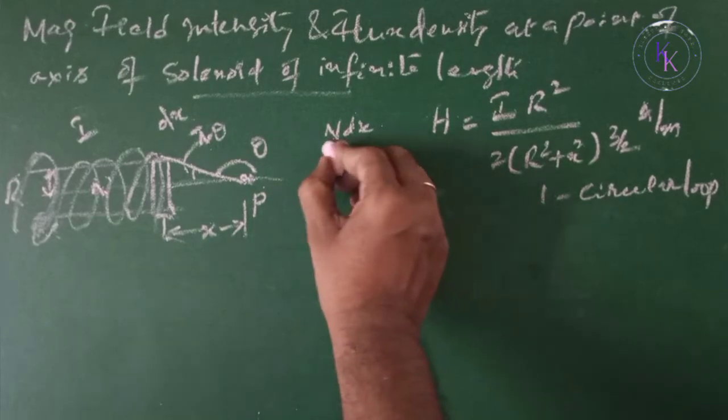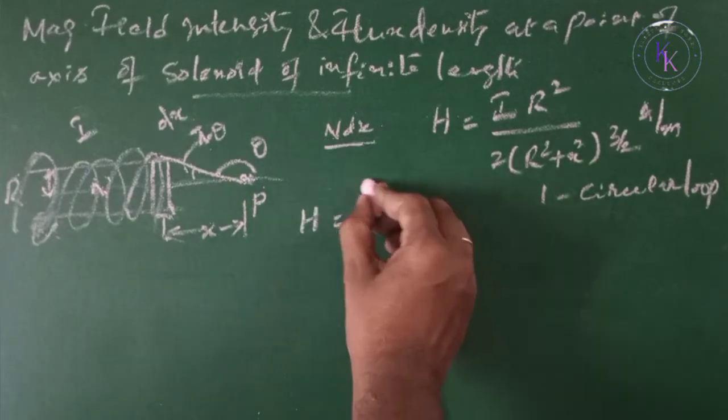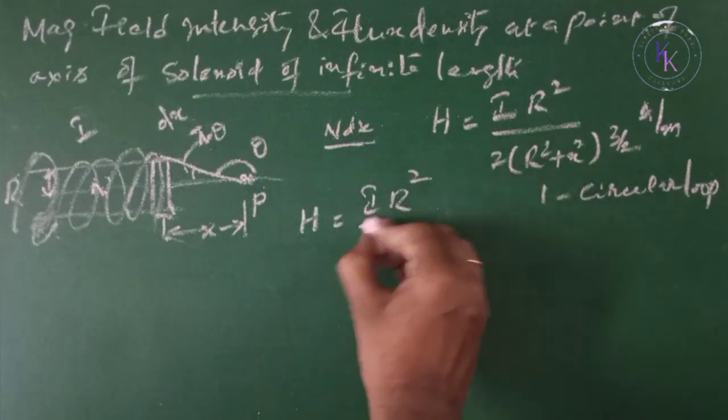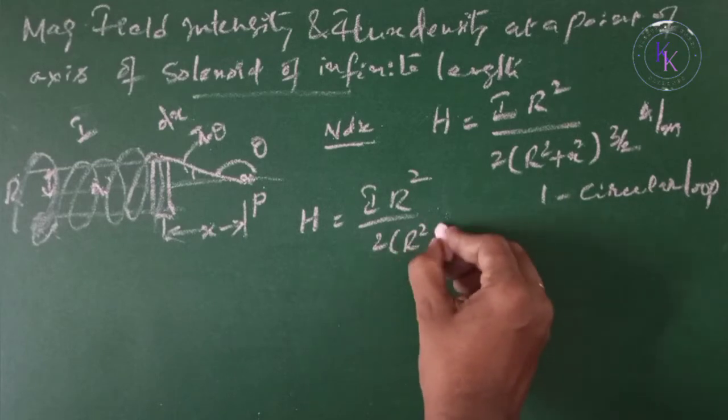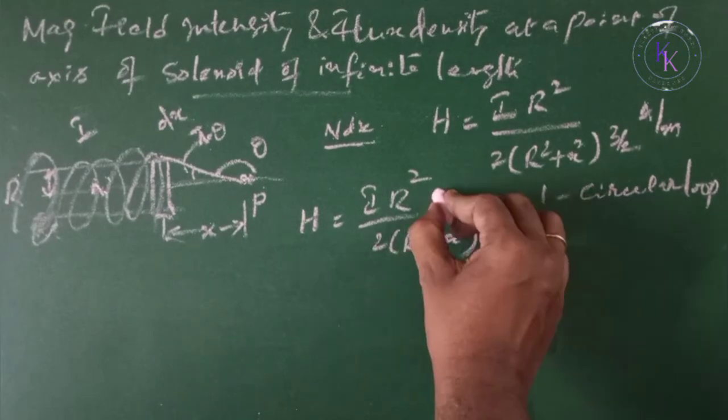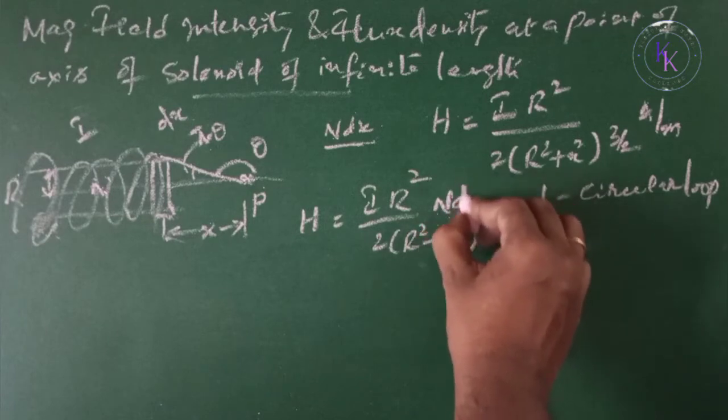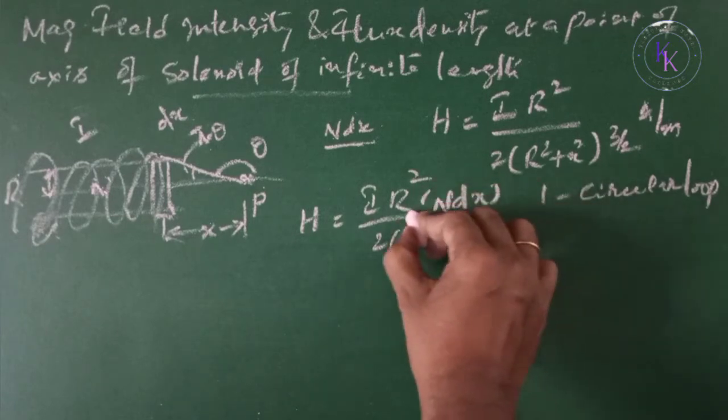But we have N dx. So substituting, we are going to get I R squared divided by 2(R² + x²)^(3/2) times N dx for our problem.